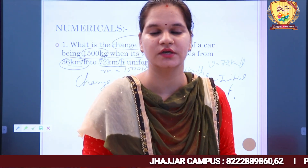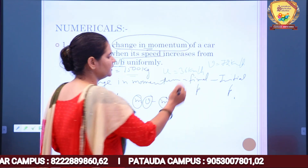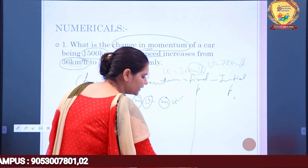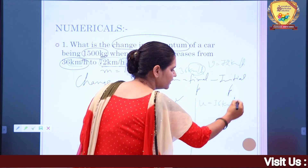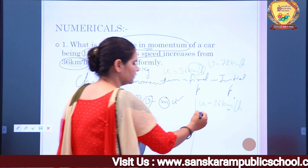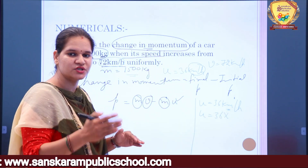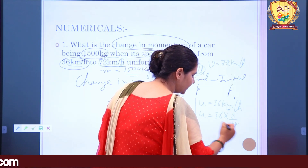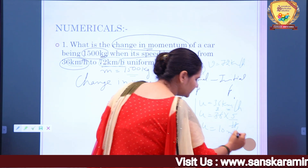You have to convert the speed into the SI system. The SI unit of speed and velocity is meter per second. To convert km/h to m/s, multiply by 5/18. So initial velocity u = 36 × 5/18 = 10 meter per second. Using the same process, final velocity v = 72 × 5/18 = 20 meter per second.